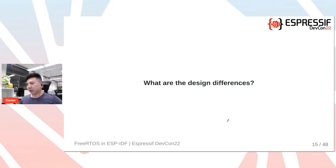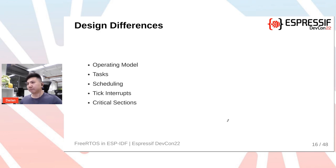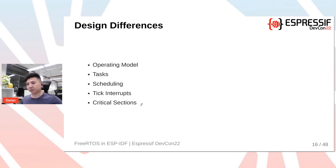Now that we've covered the three implementations, let's look at their design differences. I'll cover: operating model, how tasks differ, how the scheduling algorithm differs, tick interrupts, and finally critical sections.